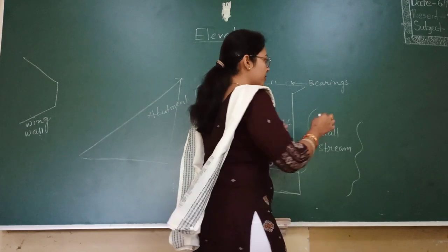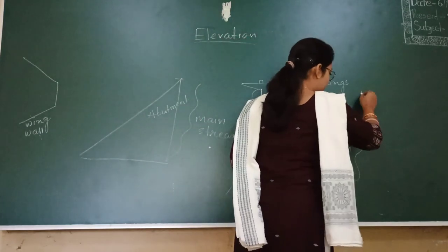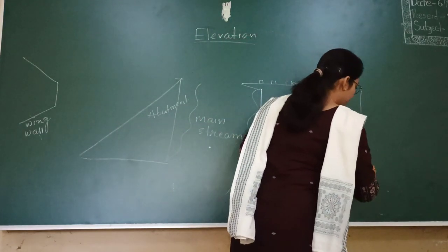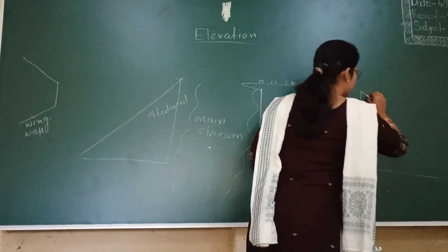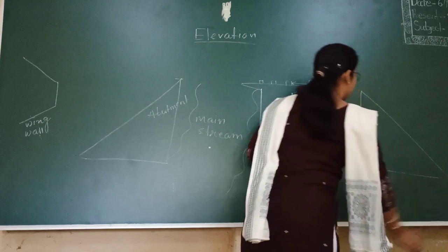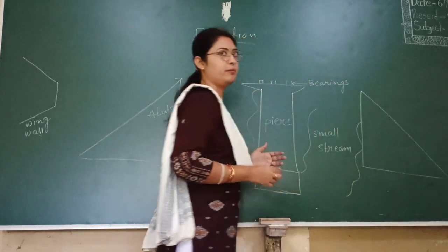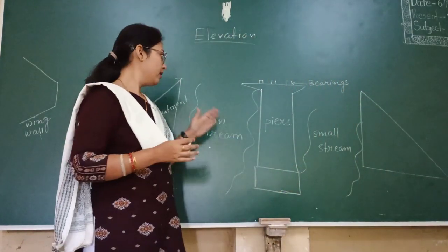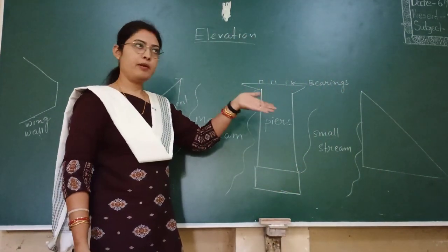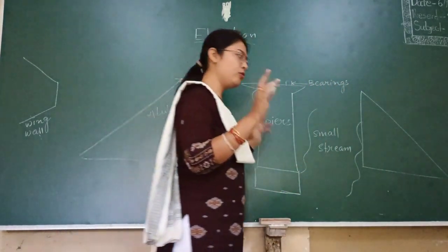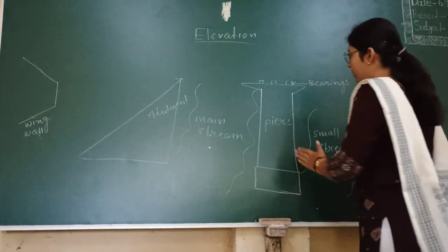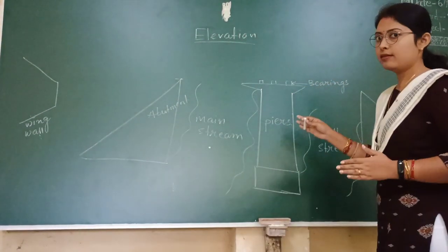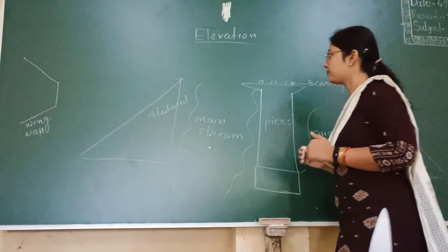Abutment lies along both the sides of the bridge. So along both the sides there is an abutment. There are two abutments and in between there is a pier.